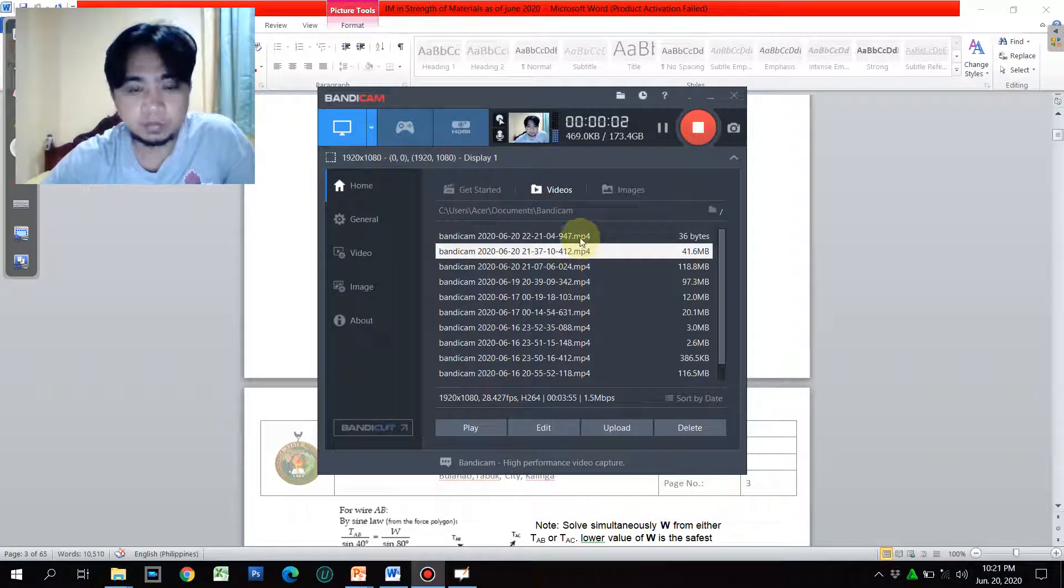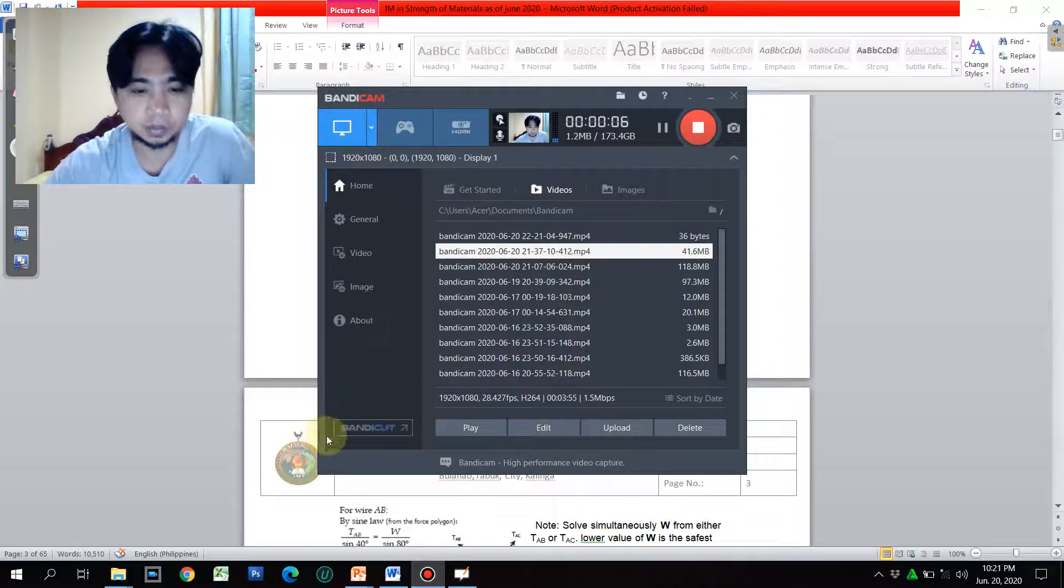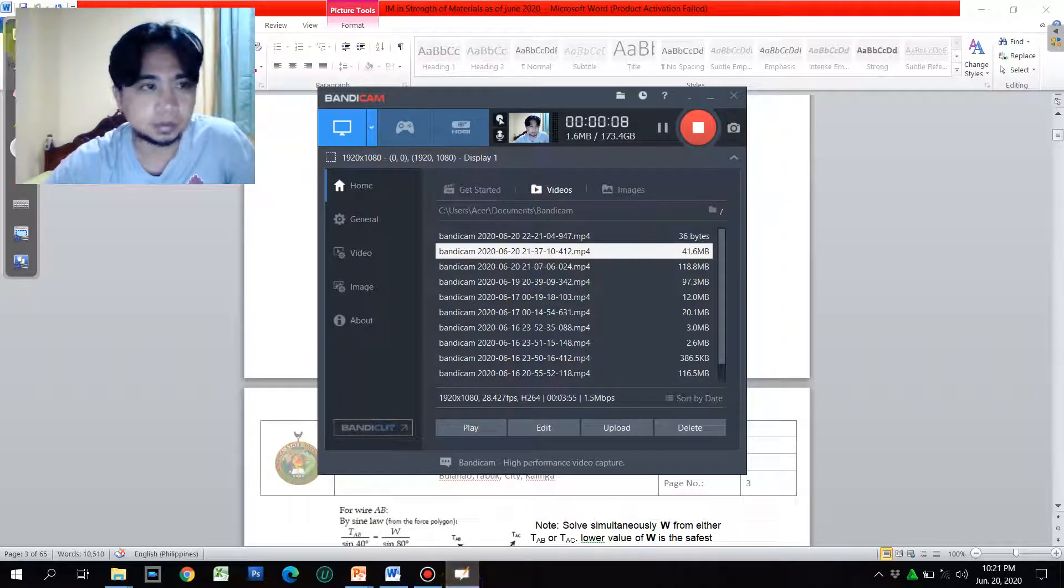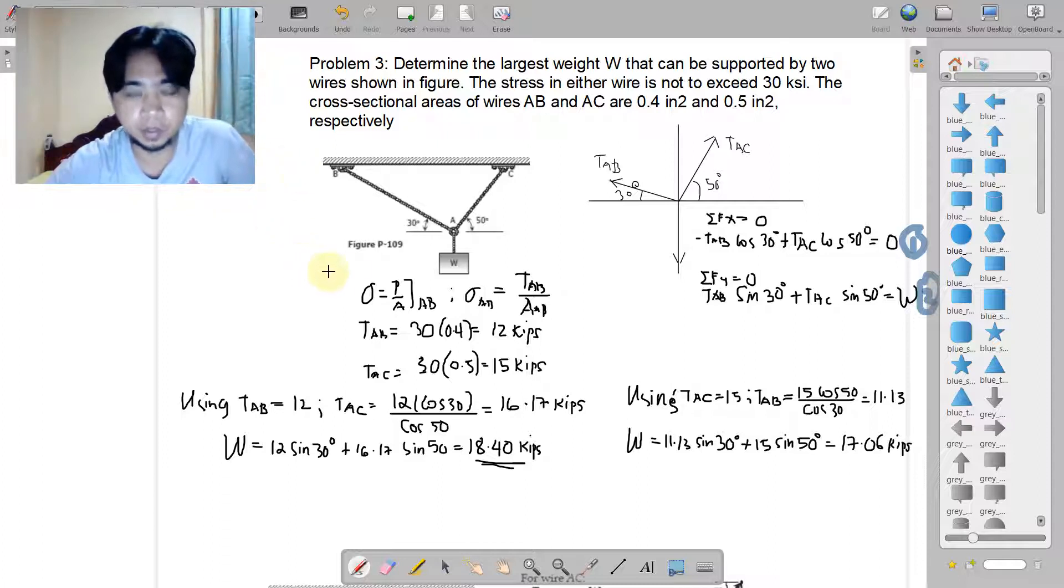Okay, welcome to the fifth session. We have problem number three under simple stress. For the problem, we have here a weight supported by these two cables of different angles, so we have here a tension at AC and tension at AB.